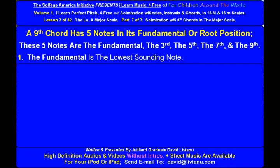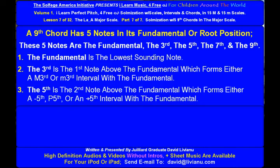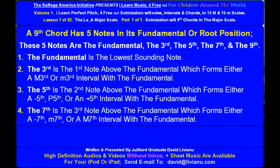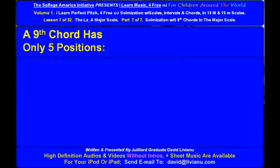The fundamental is the lowest sounding note. The third is the first note above the fundamental which forms either a major third or minor third interval with the fundamental. The fifth is the second note above the fundamental which forms either a diminished fifth, perfect fifth, or an augmented fifth interval with the fundamental. The seventh is the third note above the fundamental which forms either a diminished seventh, minor seventh, or a major seventh interval with the fundamental. The ninth is the fourth note above the fundamental which forms either a minor ninth, a major ninth, or an augmented ninth interval with the fundamental.